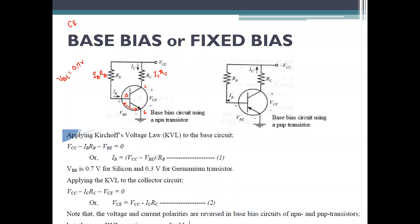This is your NPN transistor and this is your PNP transistor. In the PNP transistor, the current flows from emitter to collector — you can see the current flowing outwards. There will be a drop of IB × RB here and IC × RC here. The difference is the supply polarity: for NPN transistor, it should be plus VCC, and for PNP transistor, it is minus VCC.